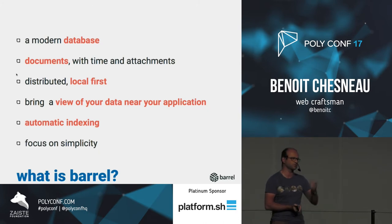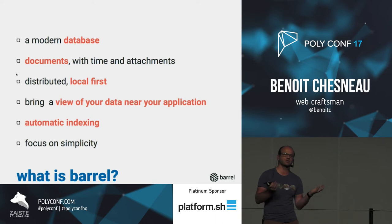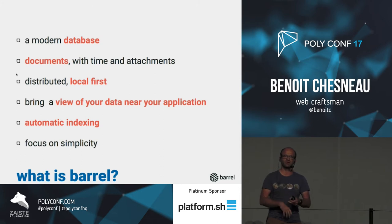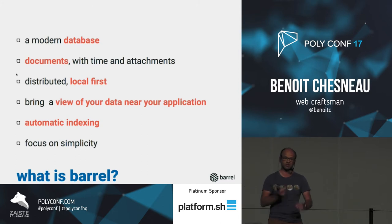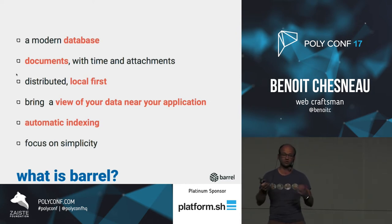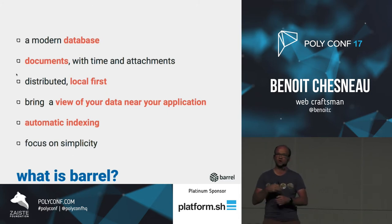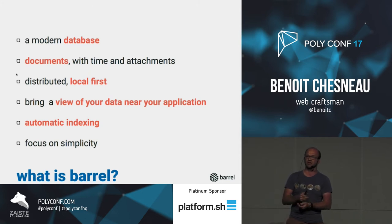Barrel has automatic indexing, for two reasons. I don't want to have to know what I want to index because my data can change. As some of you working on applications know, over time your data model will change. Rather than trying to migrate, just keep your data in your database — you don't want dangerous migration steps where you can lose data. You just want to augment your data model and access it over time. This is what automatic indexing gives you.